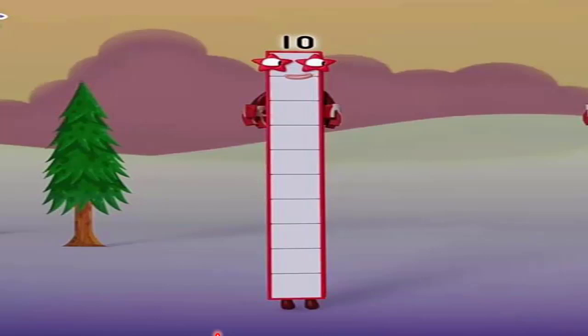Once there was a number block. Let's count the blocks in it: 1, 2, 3, 4, 5, 6, 7, 8, 9, 10. This is a 10 number block. Students, this 10 number block is very sad and unhappy. You know why? This number block looks very sad because he has no friend. He has no friend at all.